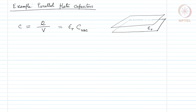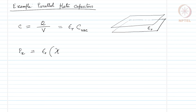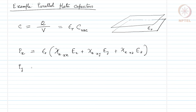Now, if the dielectric material were not linear — if we had a non-linear dielectric material — then the susceptibility would not be a scalar but in general a tensor. As a response to the electric field, the polarization components would look like: P_x = epsilon_naught times (chi_exx * E_x + chi_exy * E_y + chi_exz * E_z). Similarly, P_y and P_z can be written in analogous forms with their respective tensor components.